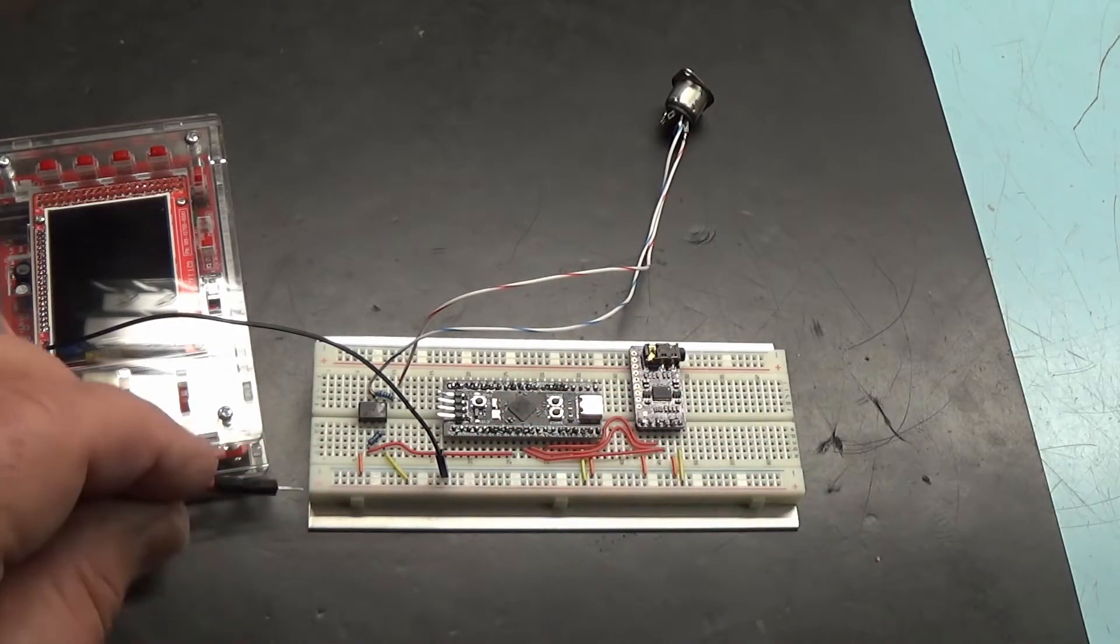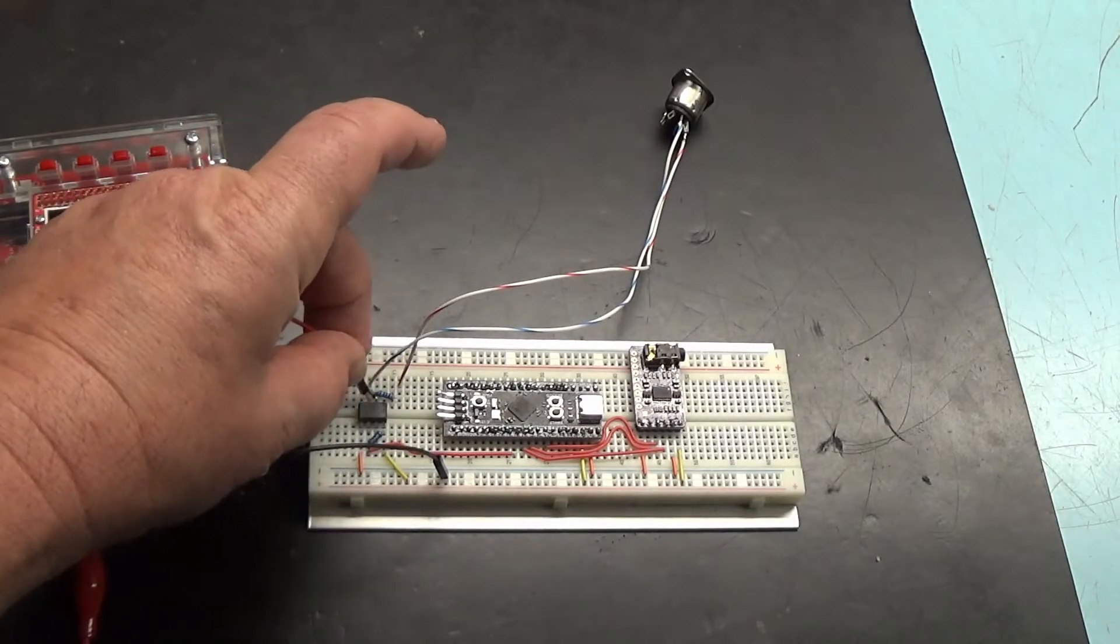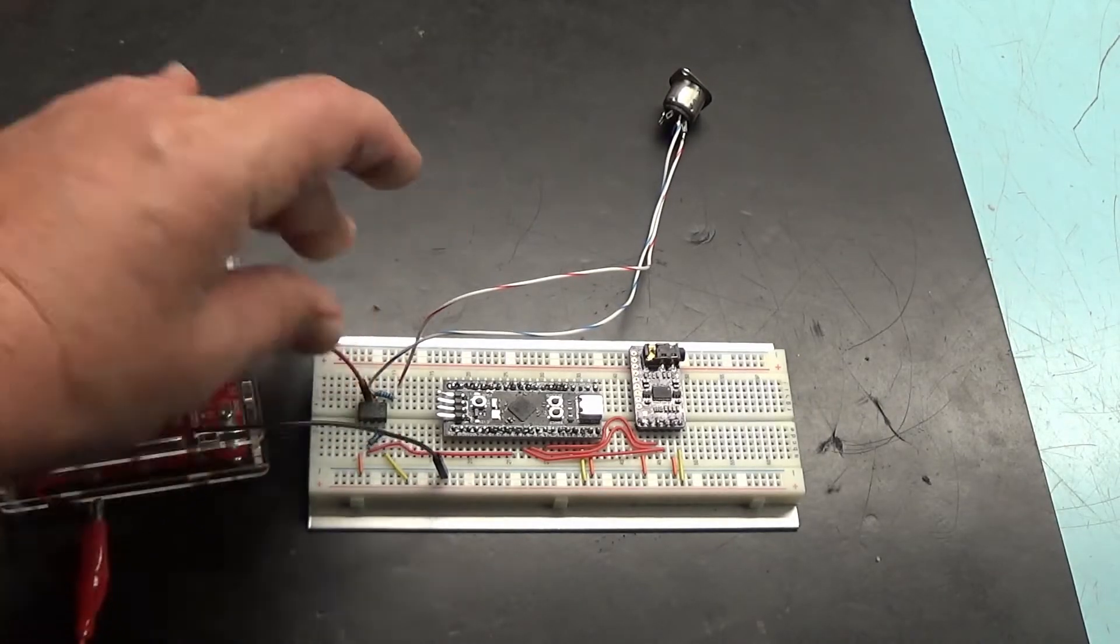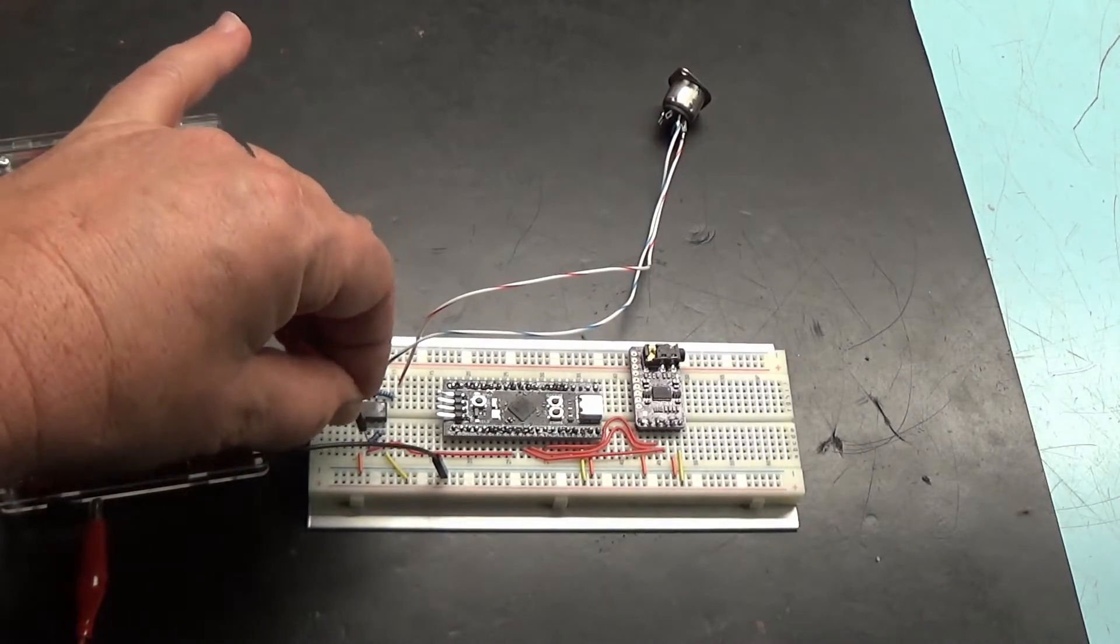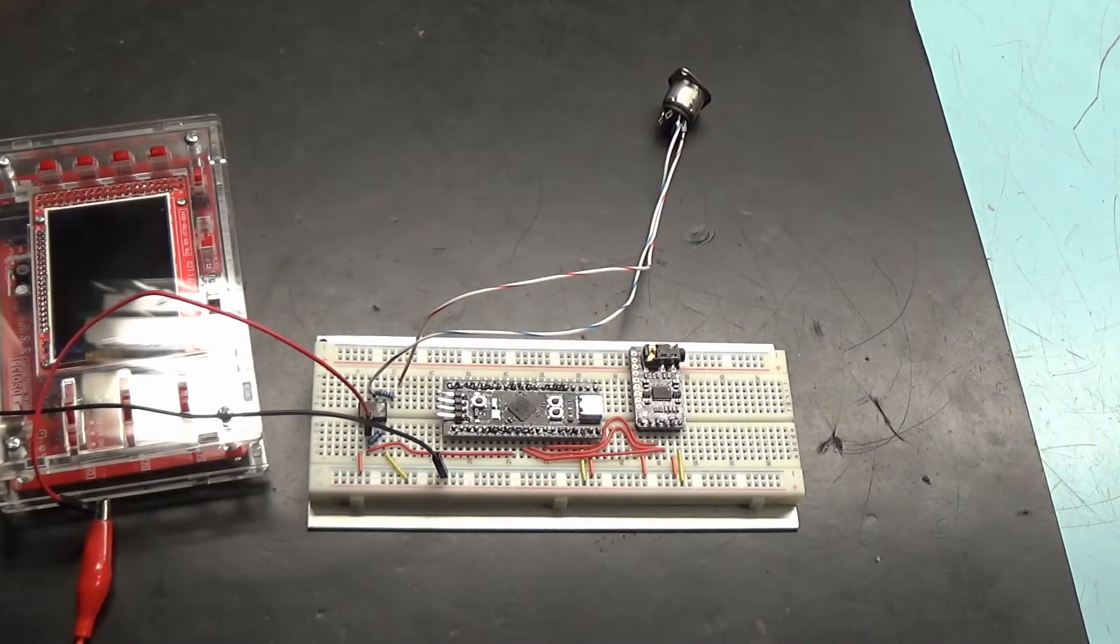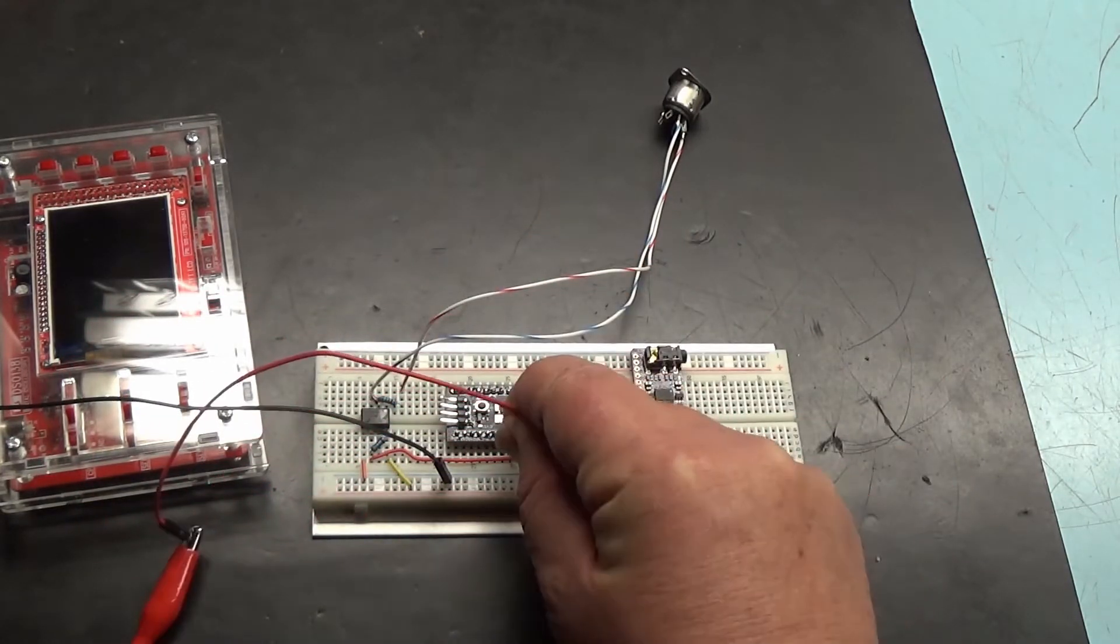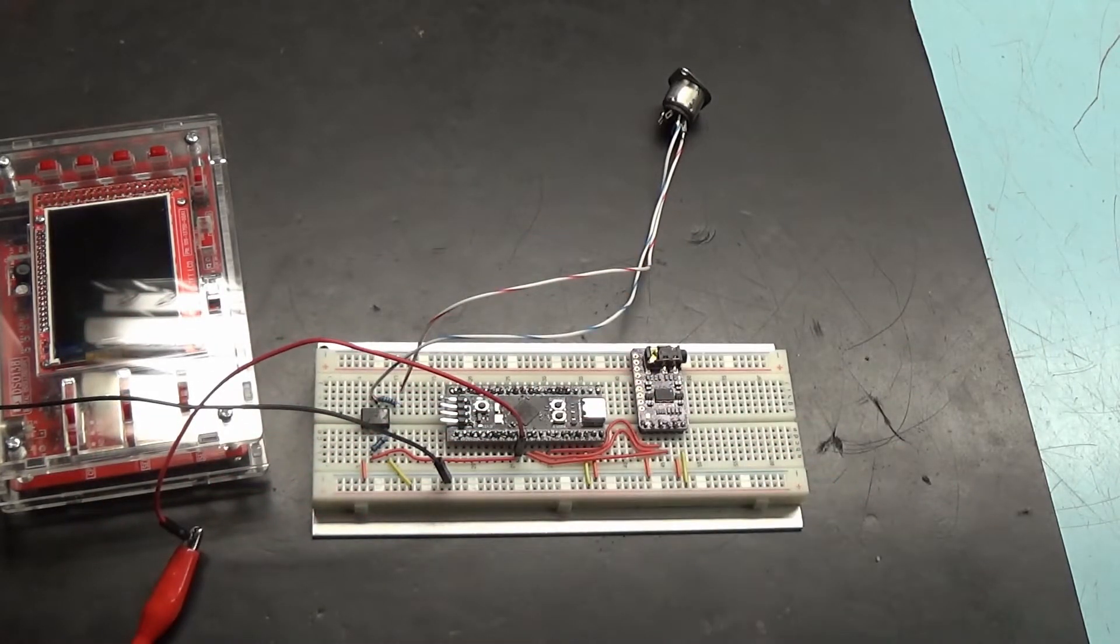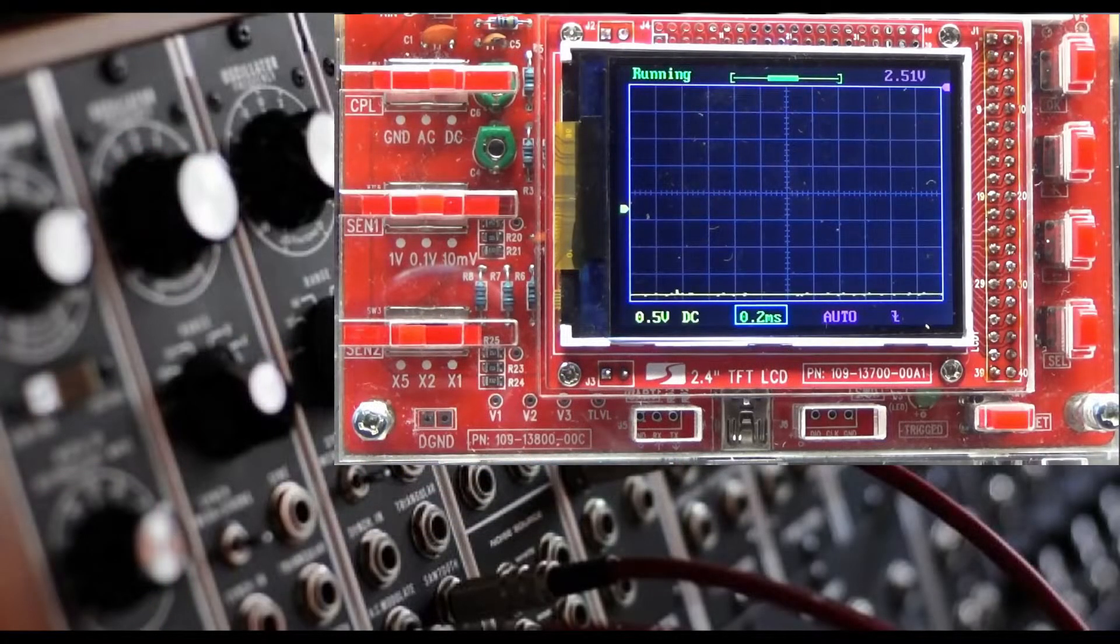The first point we are going to test is going to be the MIDI input signal which would be right about there. Then we'll move to that position and then we'll move to that position and so on using the cheap oscilloscope.